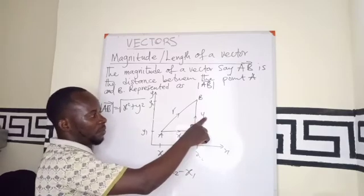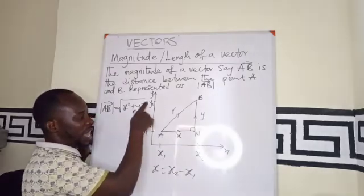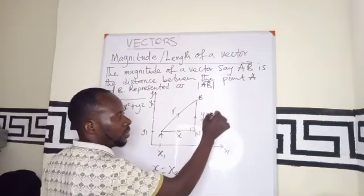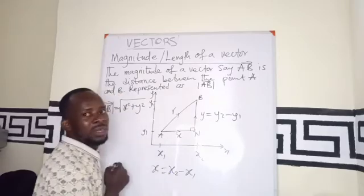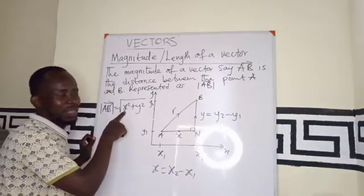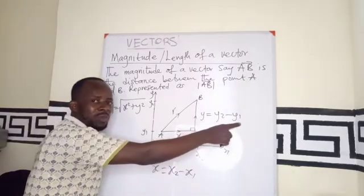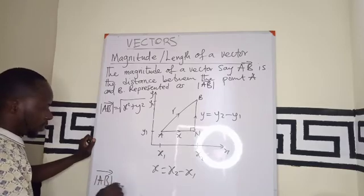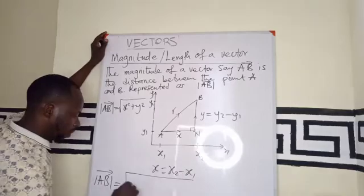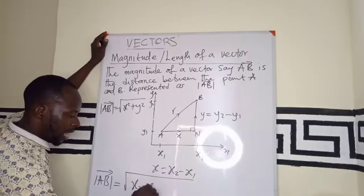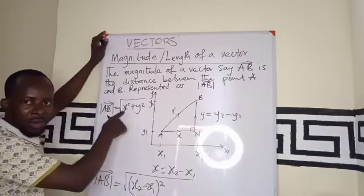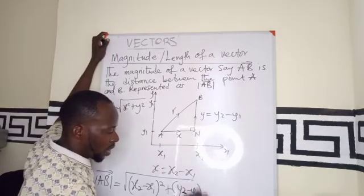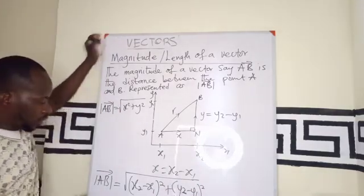Similarly, if I'm looking for the Y, it will be, if here is 5, here is 2, the distance, which is the magnitude, will still be 3. So, the Y will also be Y2 minus Y1. So, if I want to replace the X with the Y1, the Y2 minus Y1, then my magnitude of AB is going to be the square root of X2 minus X1 all squared. Before, the X is already squared. Plus, Y2 minus Y1 all squared. So, this is what we have.